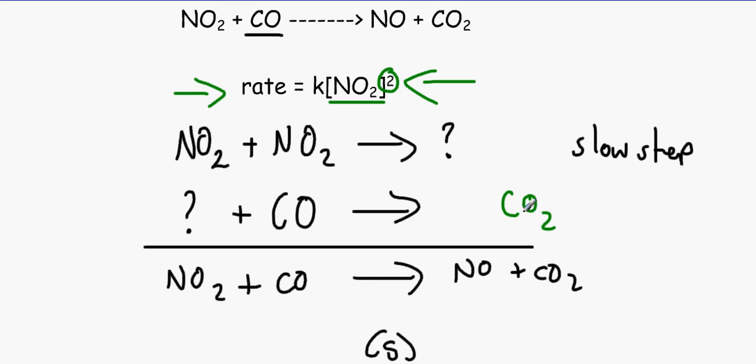And NO2, one of NO2 would be here. Why? Because we need to have one molecule of NO2 somewhere in the slow or fast step.